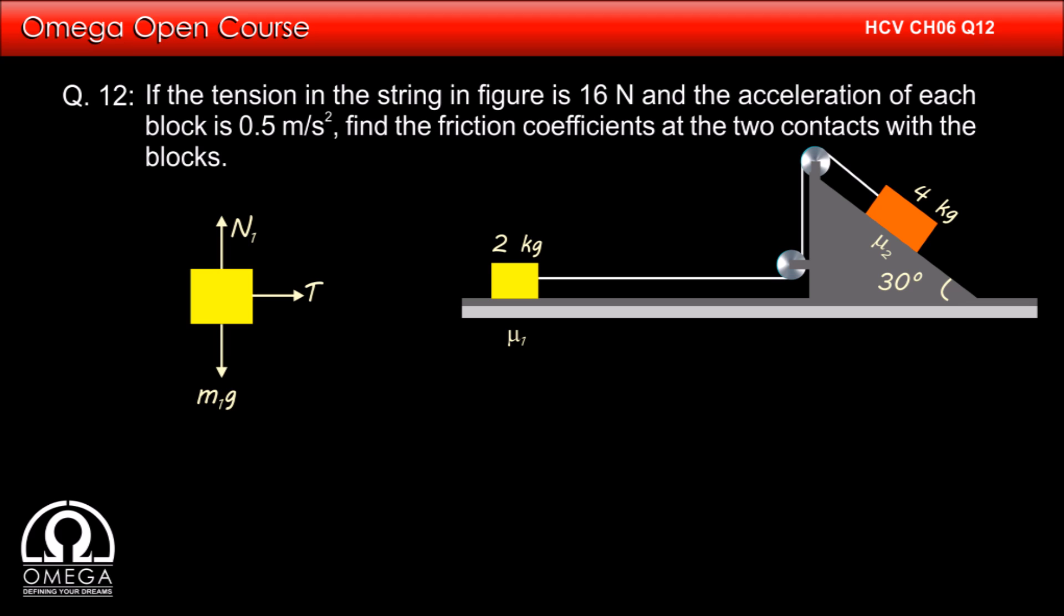Tension T in the string is pulling it towards right and friction force with magnitude μ₁ times normal is acting towards left. The block is moving towards right with acceleration A, which according to question is 0.5 meter per second square.